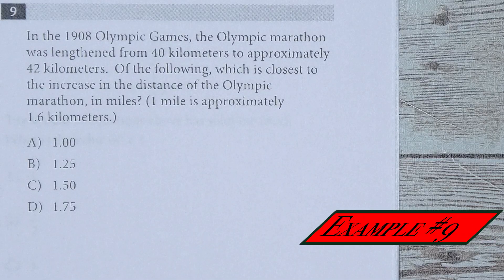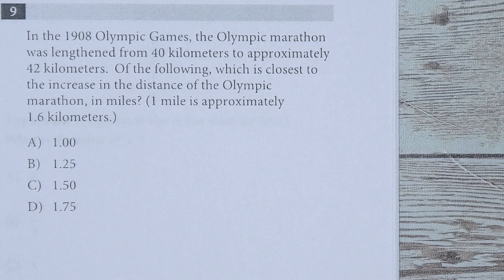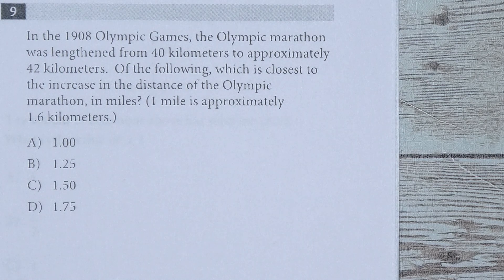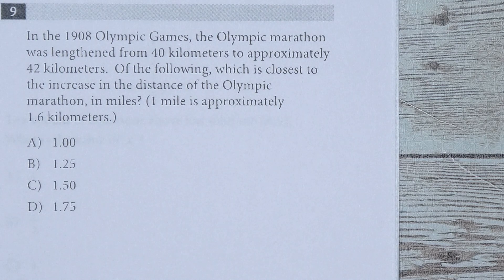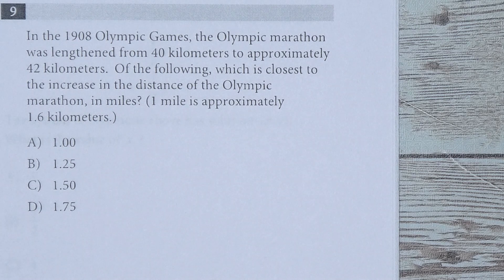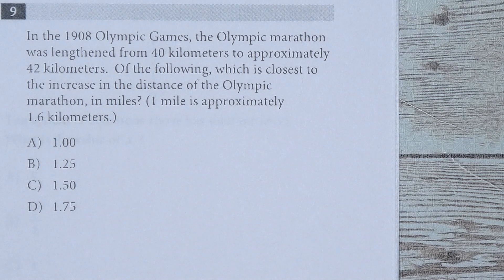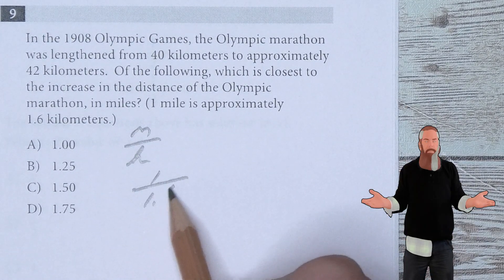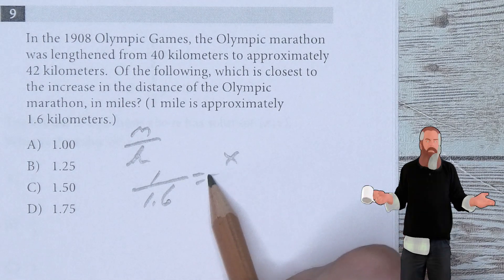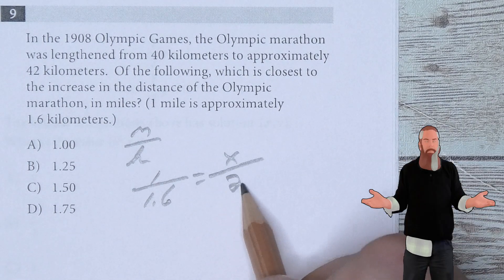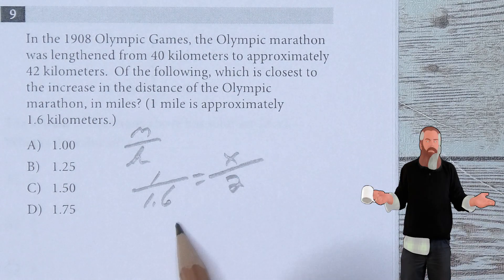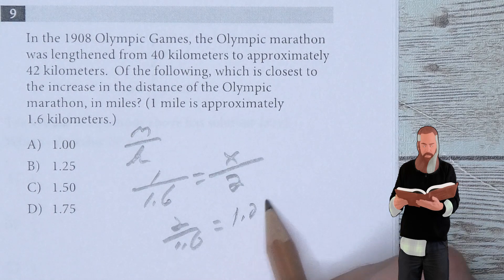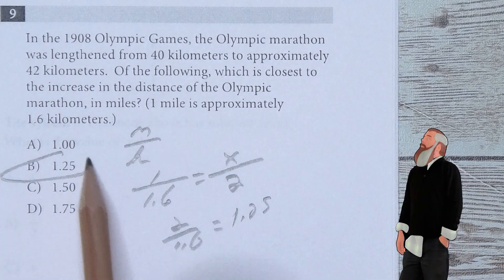In the 1908 Olympic Games, the Olympic Marathon was lengthened from 40 kilometers to approximately 42 kilometers. Which is closest to the increase in distance of the Olympic Marathon in miles? One mile is approximately 1.6 kilometers. We're dealing with miles over kilometers: 1 mile is 1.6 kilometers. We want to know how many miles were increased when it increased 2 kilometers. This means 2 divided by 1.6, which is 1.25, or B is the answer.